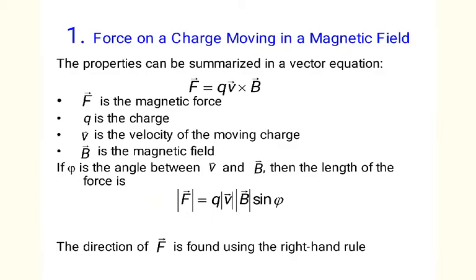To find the magnetic force, we use the following equation: F equals q times v cross B. Here F is the magnetic force, q is the electric charge that feels the force, v is the velocity of this charge, and B is the magnetic field. This vector equation gives both the length and direction of the force. If φ is the angle between v and B, then the length of the force is |F| = q|v||B| sin φ. The direction of F is found using the right-hand rule.